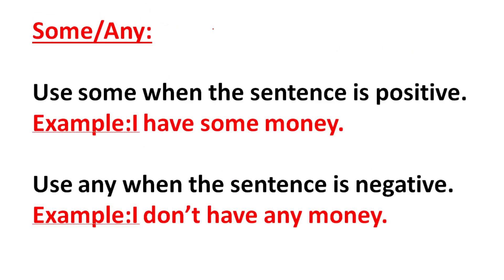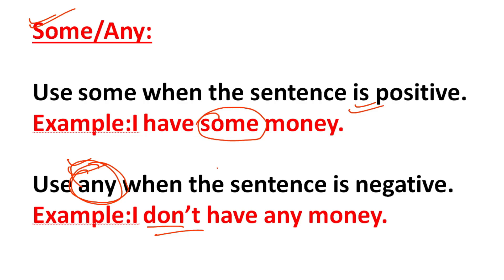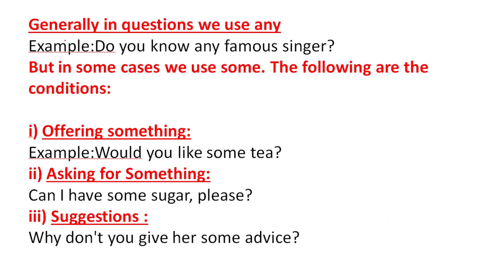Next: 'some' and 'any.' Use 'some' when the sentence is positive — for example, 'I have some money.' Use 'any' when the sentence is negative — for example, 'I don't have any money.' In questions we generally use 'any' — for example, 'Do you know any famous singer?'